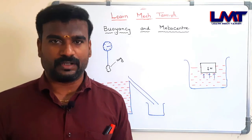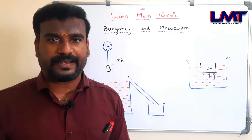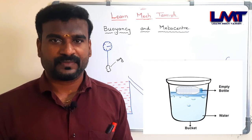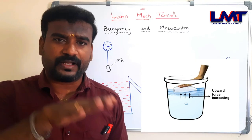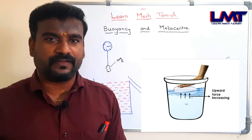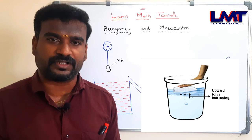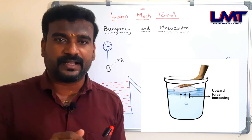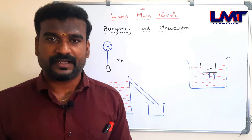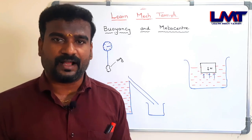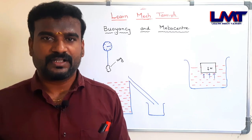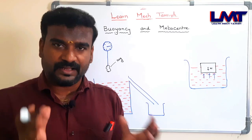For example, you can take an empty water can and run along the line. That water can floats on top. If you put your hand on the water can and push it down, you can experience a force pushing your hand back up. When you release, the water can goes back to the surface. That upward force is the buoyant force.